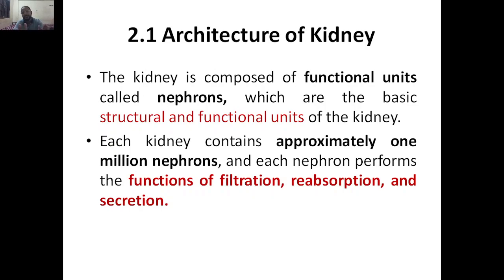The kidney is composed of functional units which are called nephrons. Just as the brain has neurons, similarly the kidney has nephrons. Neurons act as functional units for the brain; similarly, nephrons act as the basic structural and functional units of the kidney.